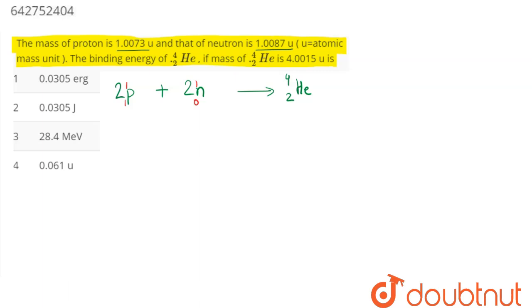of neutron is 1.0087 u, and that of helium nuclei is 4.0015 u. So in this process, mass